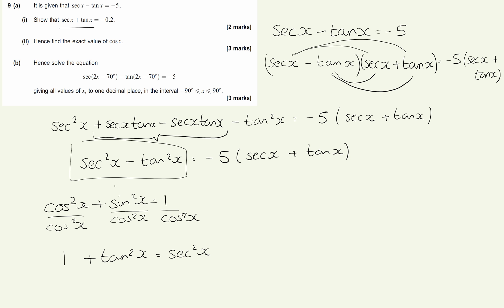Now if you're looking at what we've got here, we're looking at sec squared minus tan squared. And rearranging this here can give me 1 equals sec squared x minus tan squared x. So using that, coming down here now, we're going to write sec squared minus tan squared as 1 equals minus 5 sec x plus tan x.